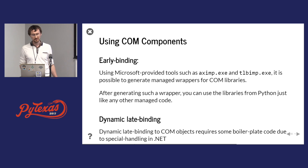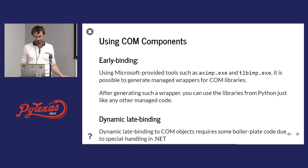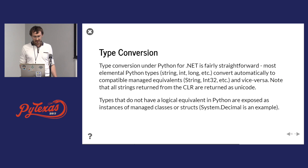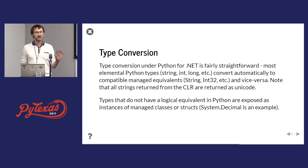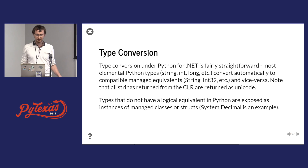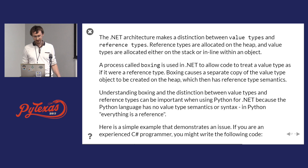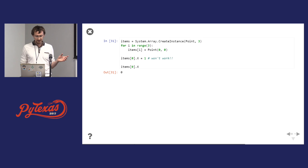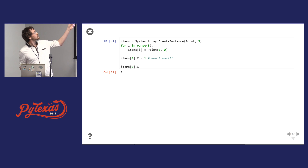COM interop is legacy but very handy if you work with Office products — we have early and late binding for COM. For type conversion, this normally works as-is, but types do not match one-to-one, so be careful with int32 vs. int64, floats vs. double precision vs. single precision floats. There are also some issues with boxing, so be careful with that kind of stuff.